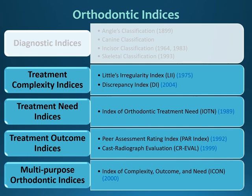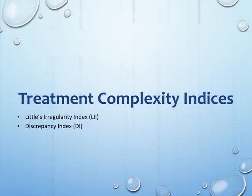We have now finished diagnostic indices and will move to treatment complexity indices. There are two main indices: the Little's irregularity index, which is a British index, and the discrepancy index, which is an American index.